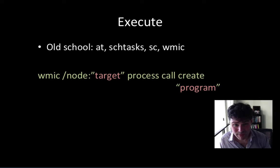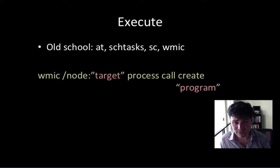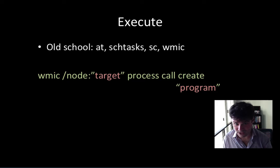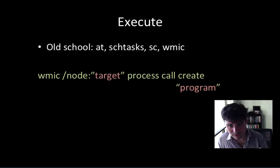Then there's WMIC. You can use WMIC, specify a target, call process call create, the program and its arguments. So these are four different ways to run a program. One thing about these four methods is that they do run the commands blind — meaning you're not going to get output back from them. But these commands are very valuable for lateral movement.